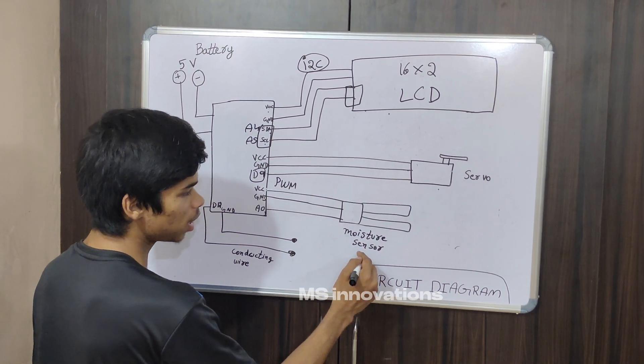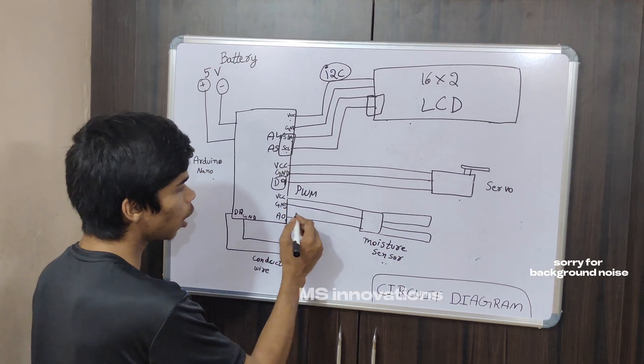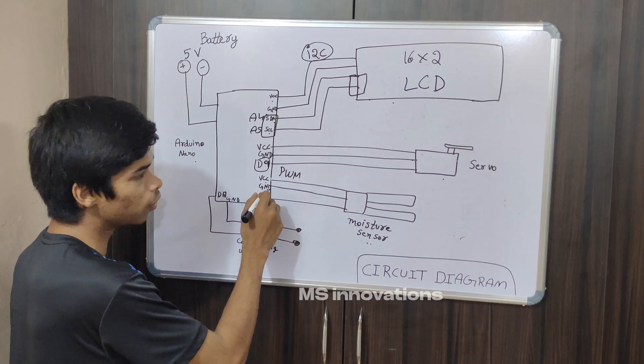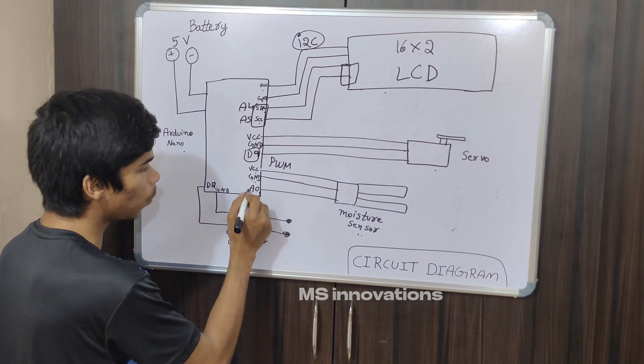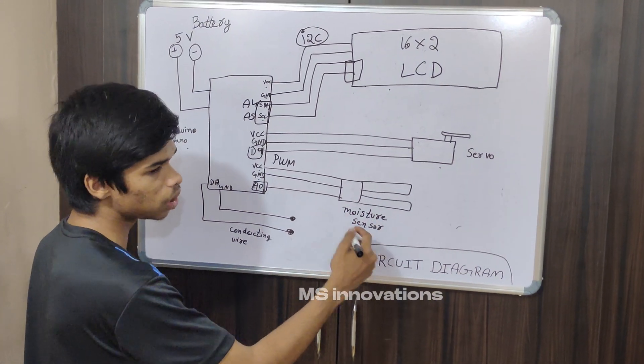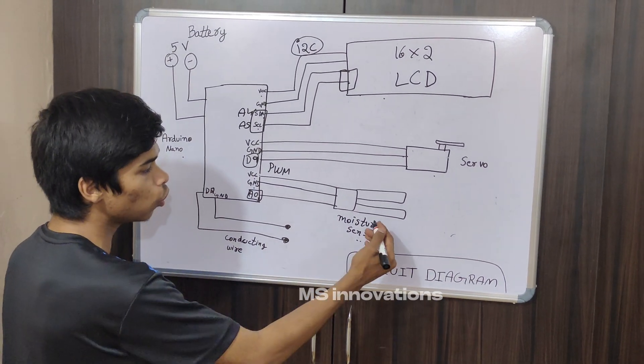Next, move on to moisture sensor. This sensor detects if it's dry waste or wet waste. Here also VCC and ground are connected to 5 volts and ground of Arduino. The A0 pin - A0 is an analog pin - this soil moisture sensor gives analog values like 0 to 1023, so you'll get to know which is dry and wet waste.